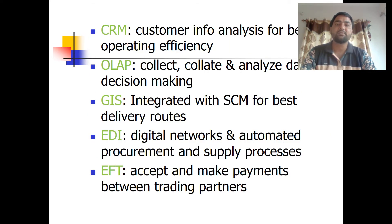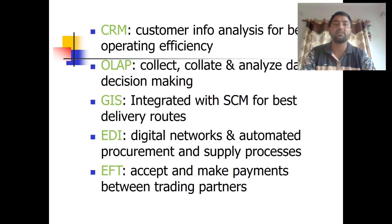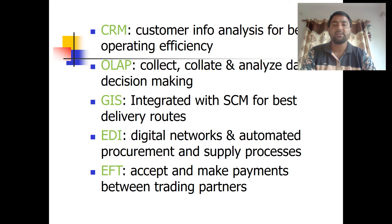CRM is the customer information analysis tool for better operating efficiency — it helps understand customers and grow the business. We have made a separate video on CRM; please go through that. OLAP is a method of collecting and analyzing data for decision making. GIS, when integrated with supply chain management, results in the best delivery routes for a product for a particular organization.